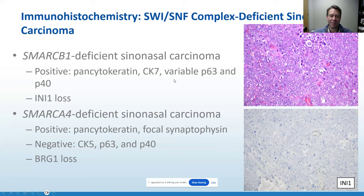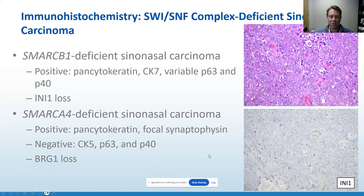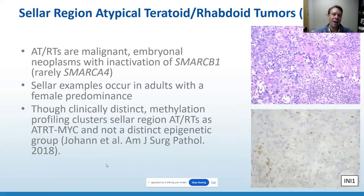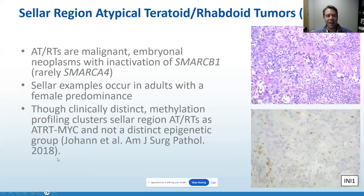SMARCB1-deficient sinonasal carcinoma is positive for pancytokeratin and CK7, variable P63 and P40, and shows INI1 loss. SMARCA4-deficient carcinoma may have synaptophysin (confusing if thinking of neuroendocrine tumors), is negative for CK5, P63, and P40, and shows BRG1 loss by immunohistochemistry. Speaking of SMARCB1 alterations, you could also have a sellar atypical teratoid rhabdoid tumor — cellar examples predominantly reported in middle-aged women. Johan et al. in 2018 showed these ATRTs cluster with the ATRT-MYC subtype. The SMARCB1-deficient and SMARCA4-deficient carcinomas are bad tumors with frequent skull base involvement, making it sometimes difficult to say exactly where they're arising.